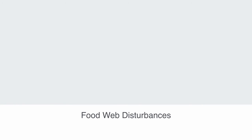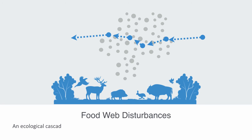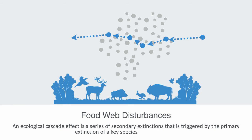In the same way that connectivity can enable ascendancy and robustness, it can also enable large food web disturbances in the form of cascades. As food webs become more interconnected, this creates more pathways for disaster spreading and cascading effects. An ecological cascade effect is a series of secondary extinctions triggered by the primary extinction of a key species in the ecosystem.